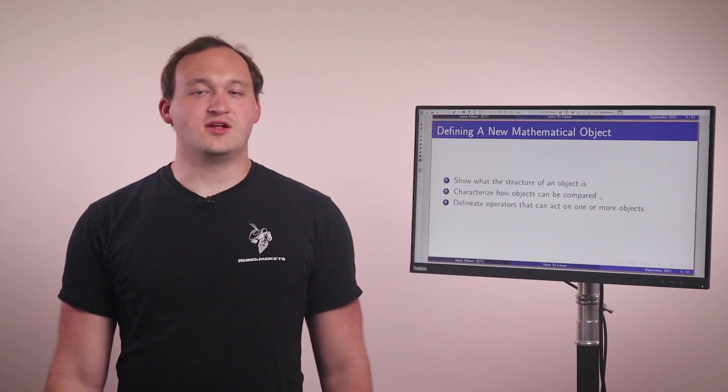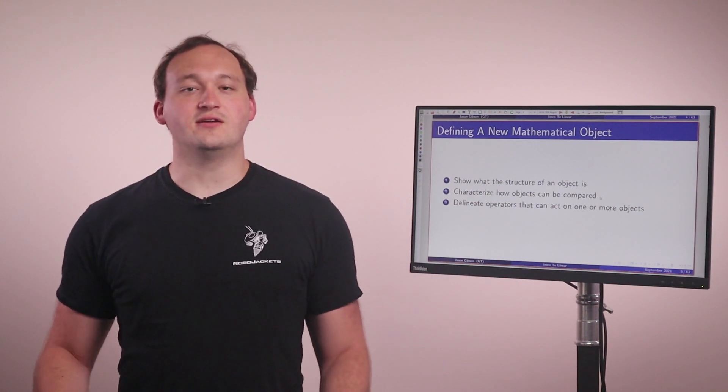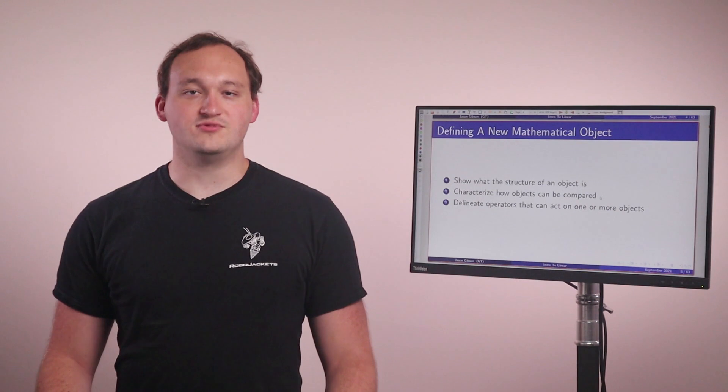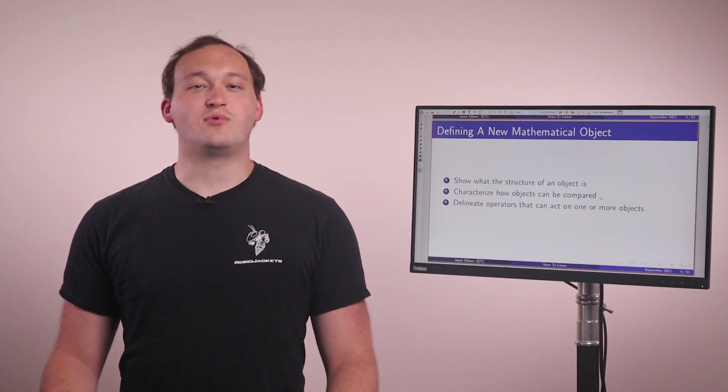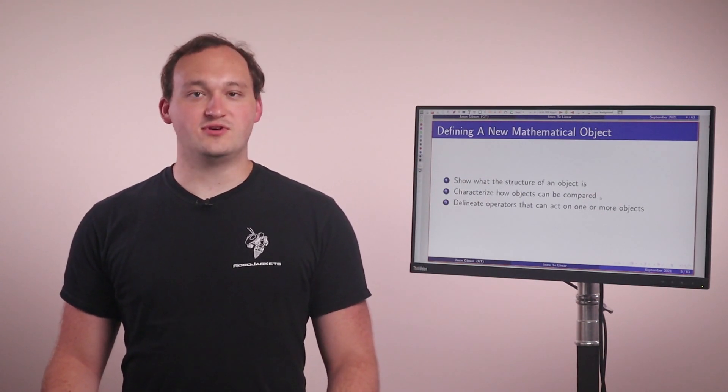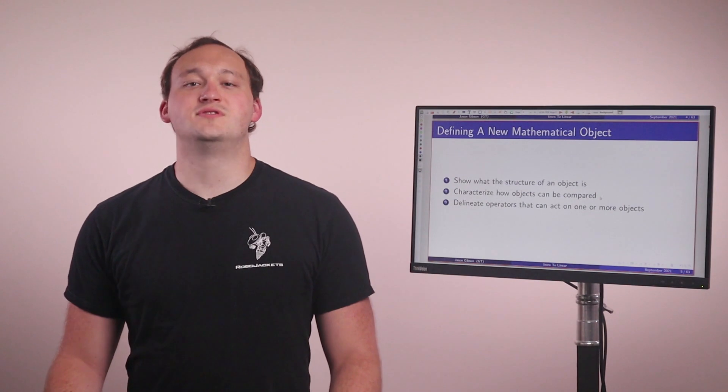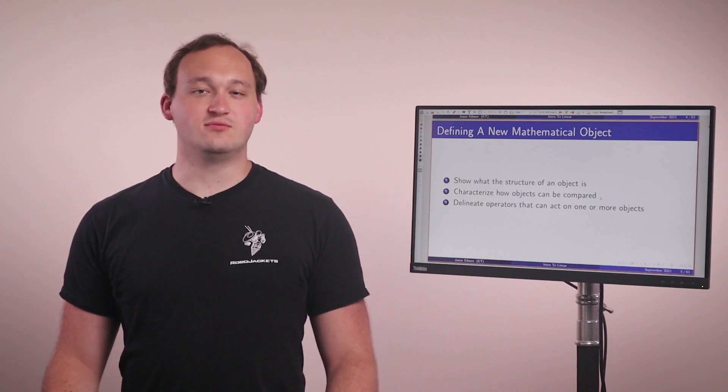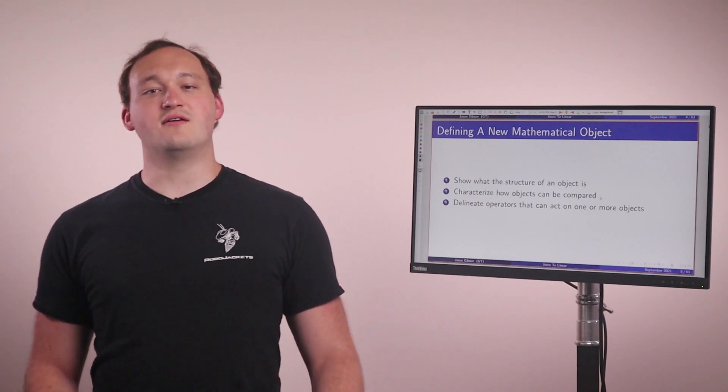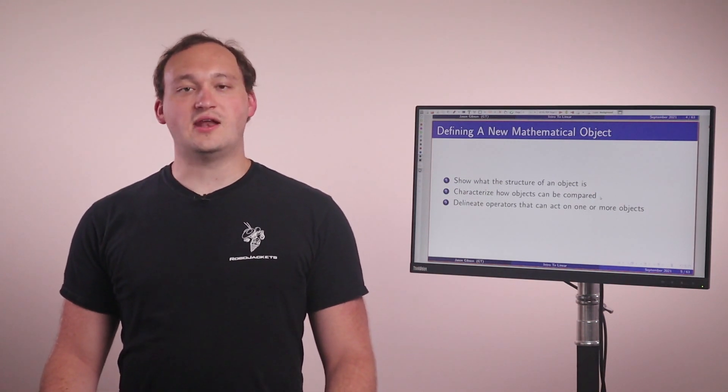So before we get into linear algebra we're going to talk about the basic idea of defining a mathematical object. You've learned about numbers previously in your math class and numbers have properties that we can use, operators that we can use to combine two numbers, and also ways to compare different numbers. So anytime you look at a new field of mathematics you're going to get a similar introduction where you have some object, things you can do with it, and how to compare them.